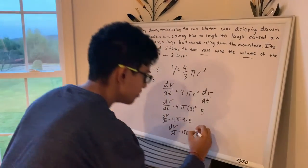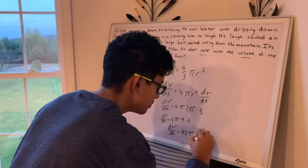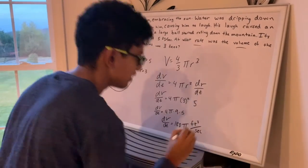So you should get dv over dt equals 180 pi, and then we have to remember the units, so since this is volume, it would be feet cubed per second. Thank y'all!